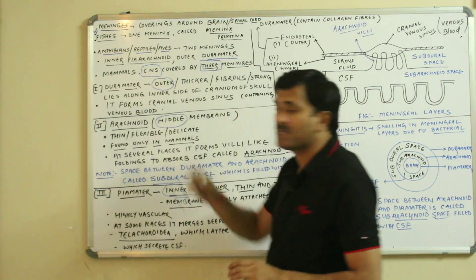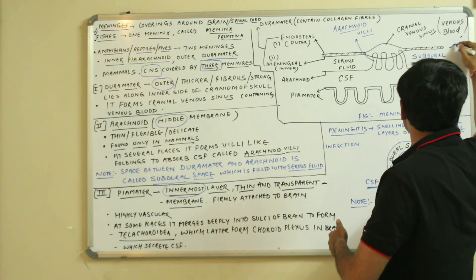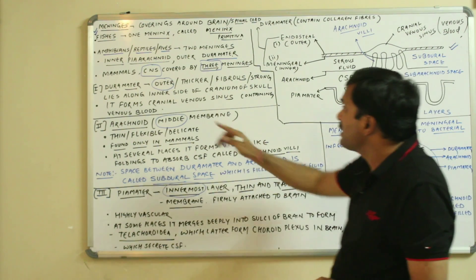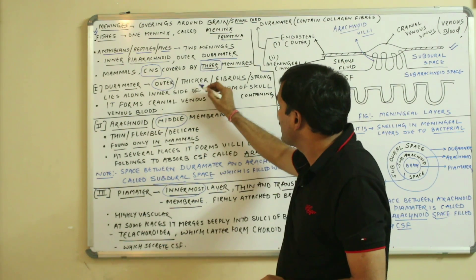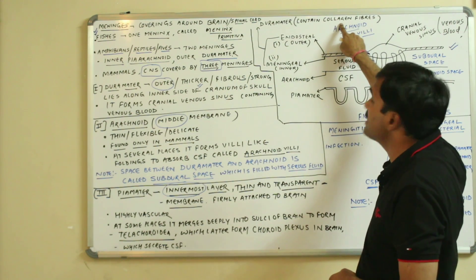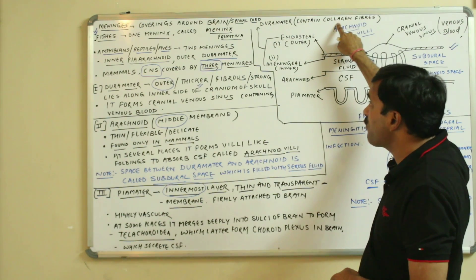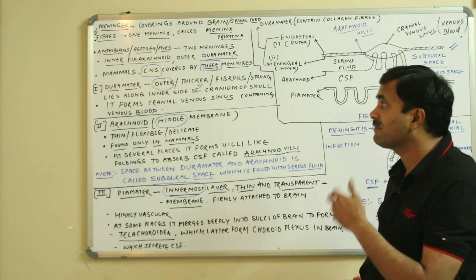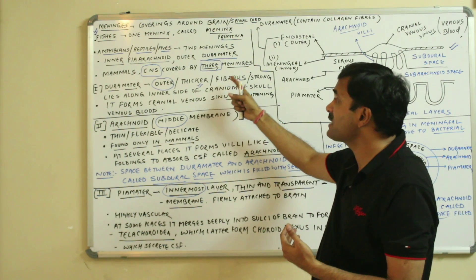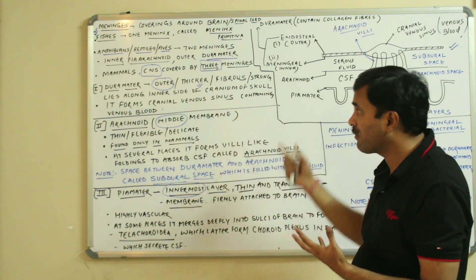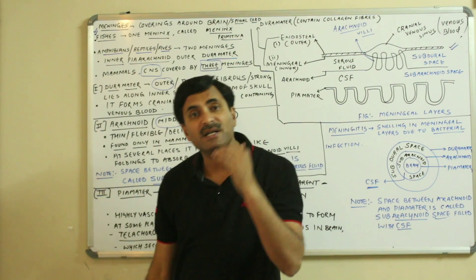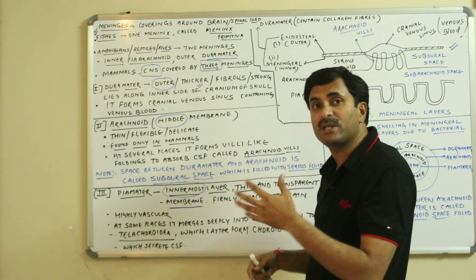The first layer is the dura mater. It is the outermost layer, so it is thicker. It is fibrous, meaning it is made up of collagen fibers, making it very strong. It lies along the inner side of the cranium of the skull.